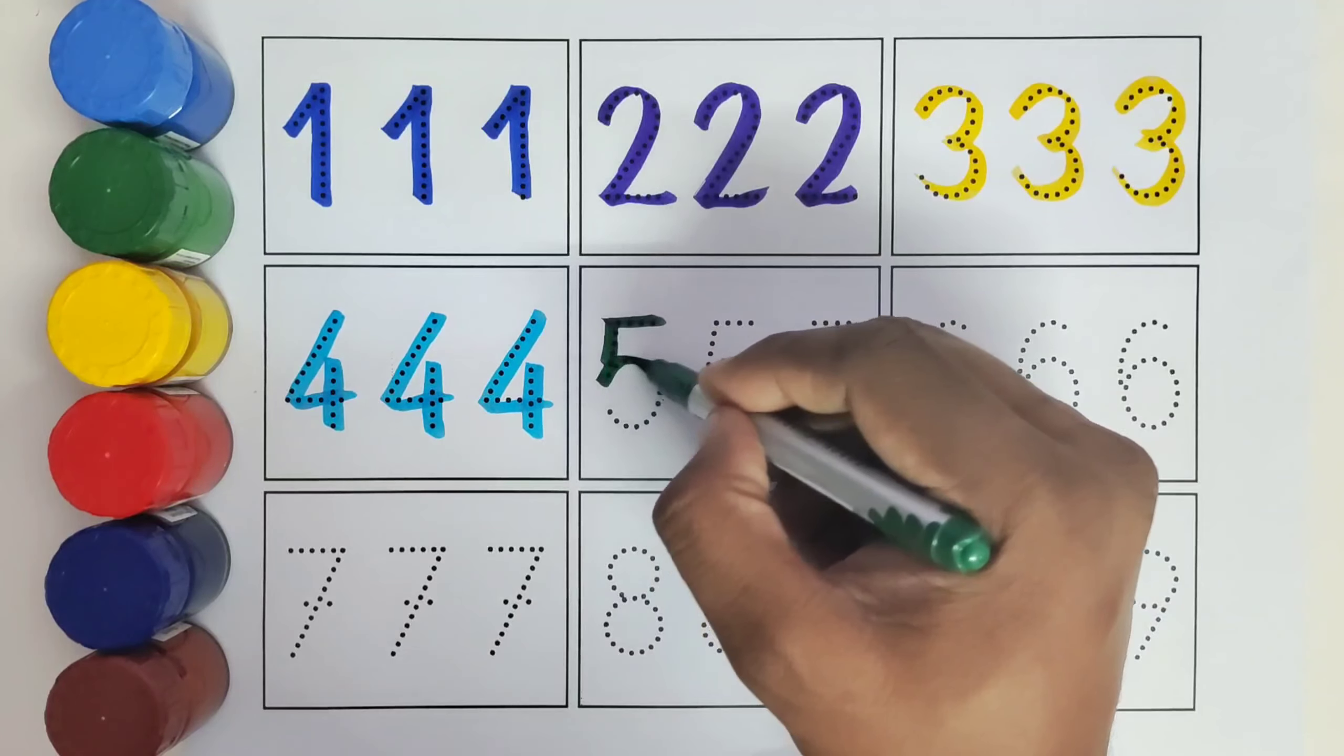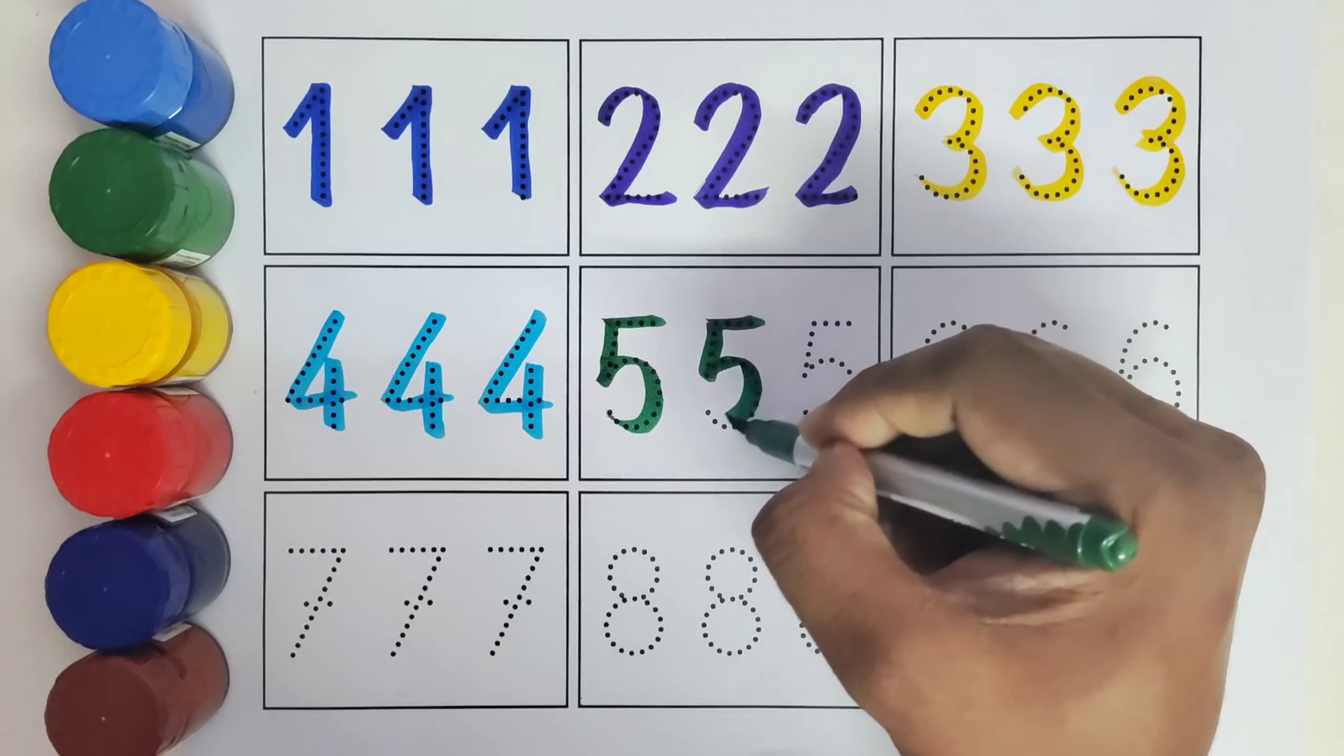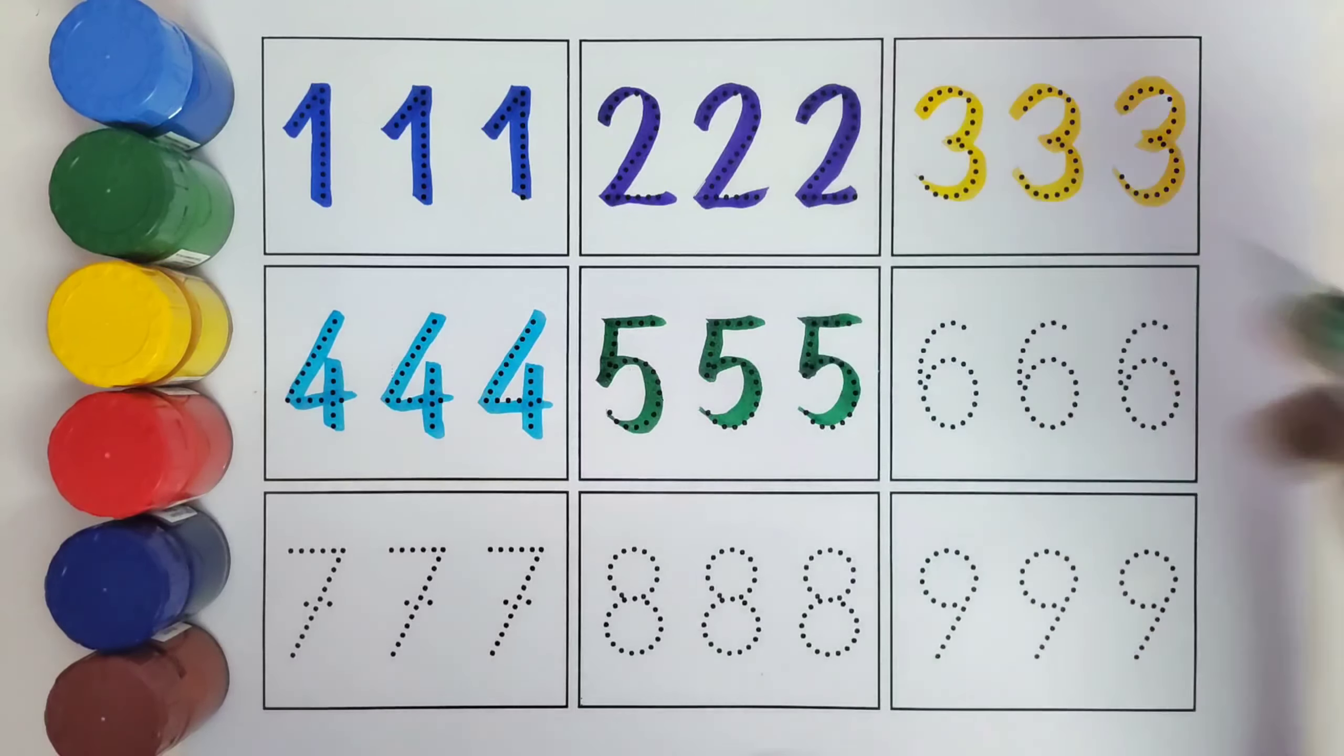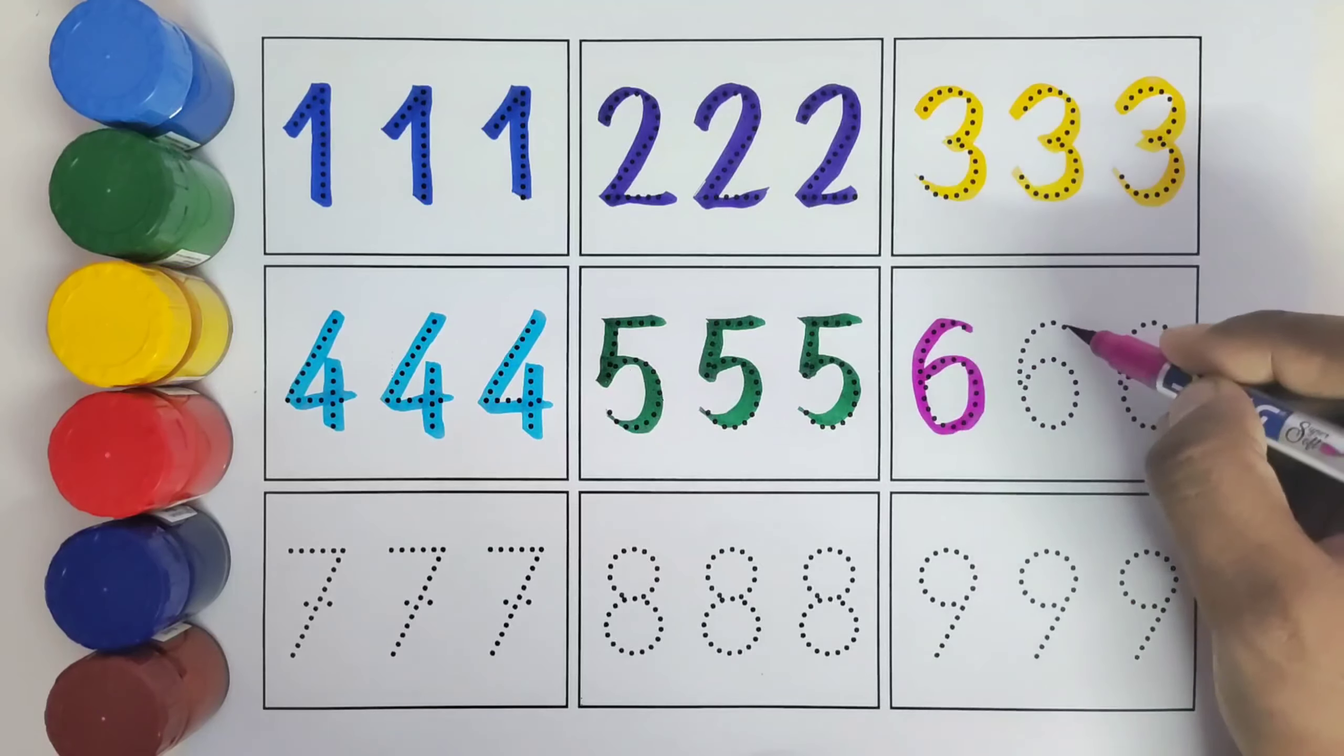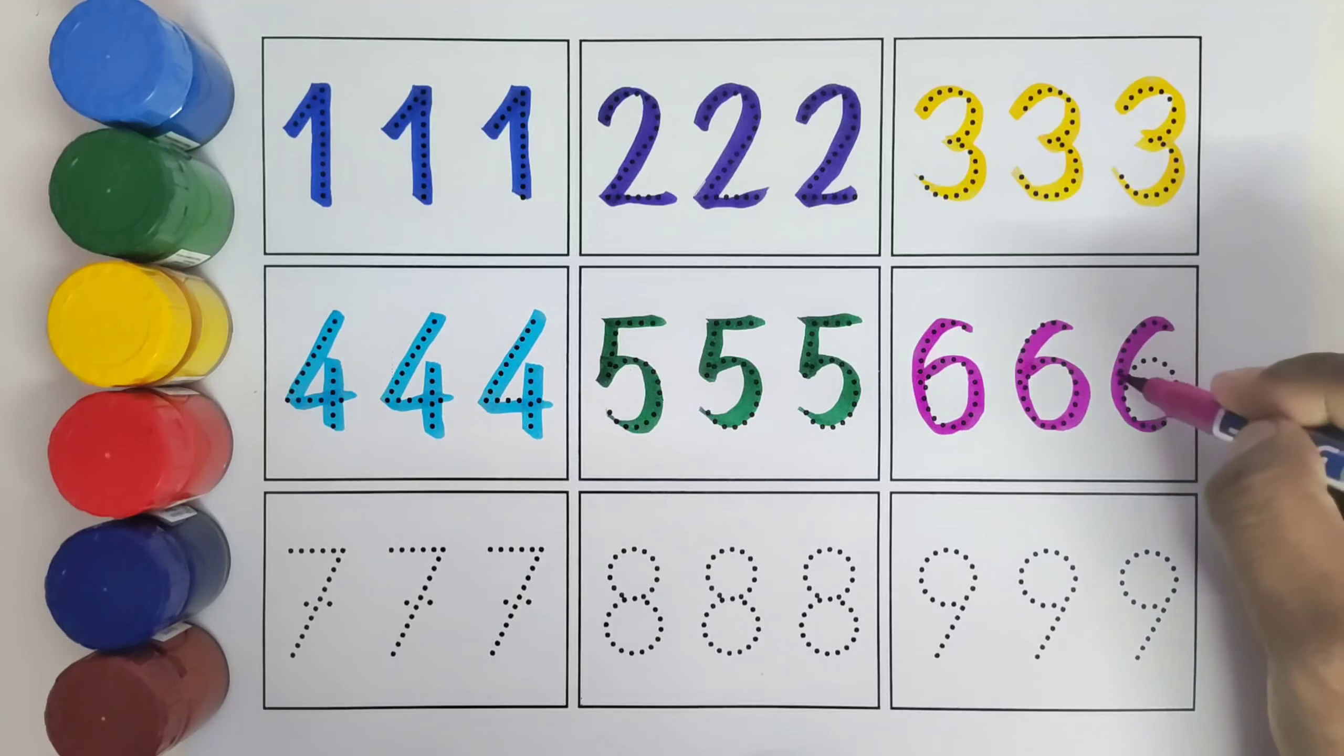This is 5. Number 5. 5. This is 6. 6. 6.